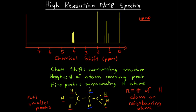Now if we look at these six hydrogens, which are all in the same environment, and we look at the number of hydrogen atoms on neighbouring carbons — the only neighbouring carbon has two hydrogens. So the value of N is two, and that means the peak caused by these hydrogen atoms underlined in red will be split into N plus one, or three smaller peaks. That's how we work it out — we look at the number of hydrogen atoms on atoms that neighbour the carbon to which our original hydrogens are bonded.